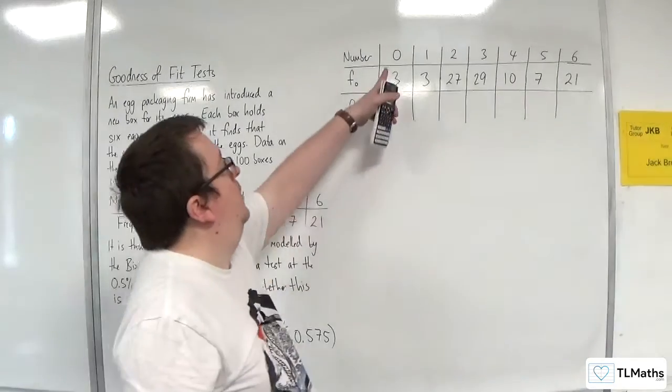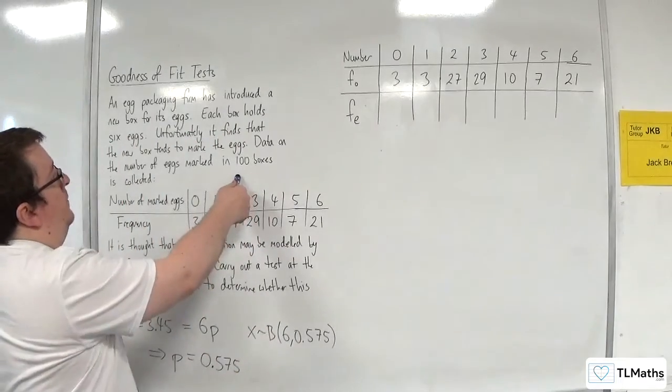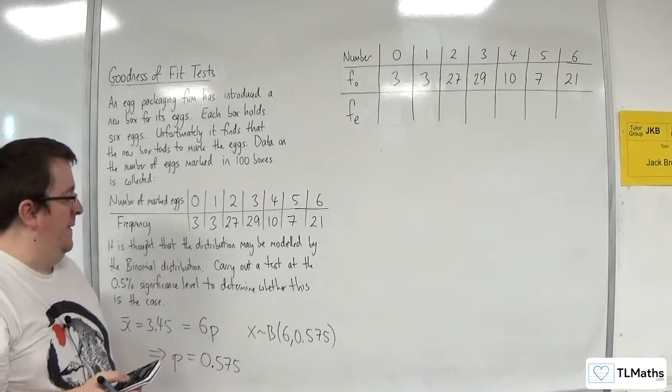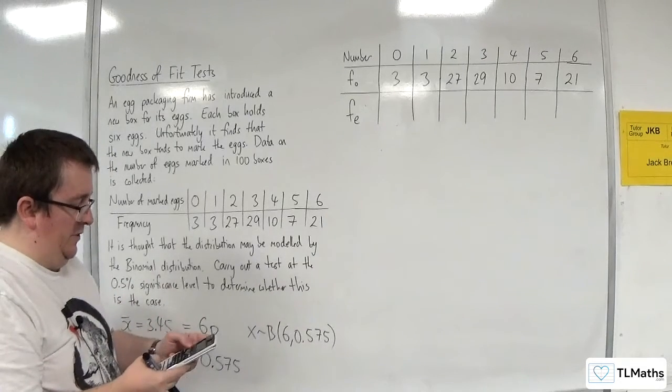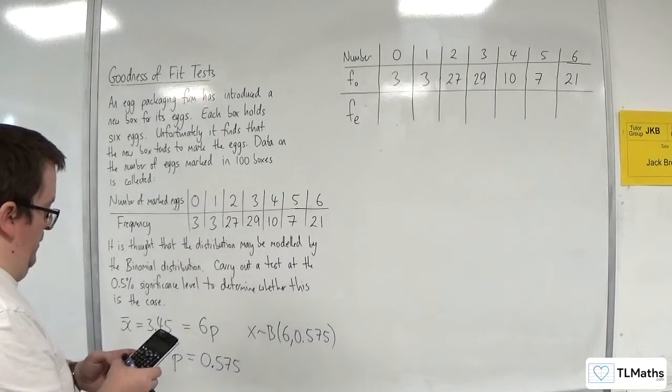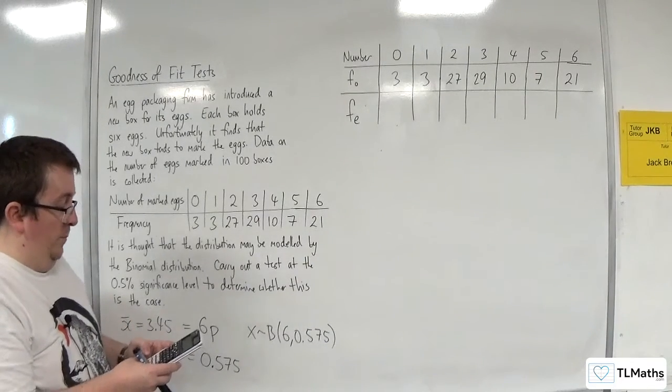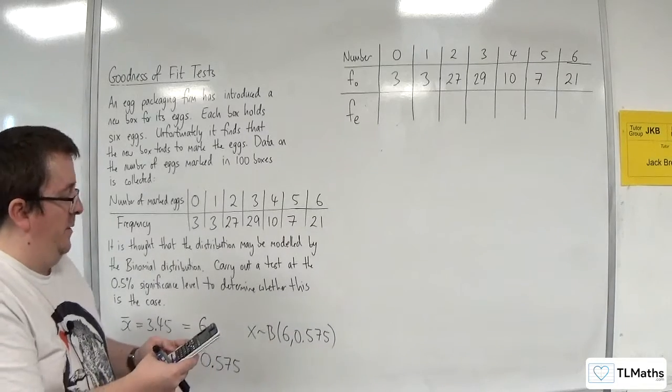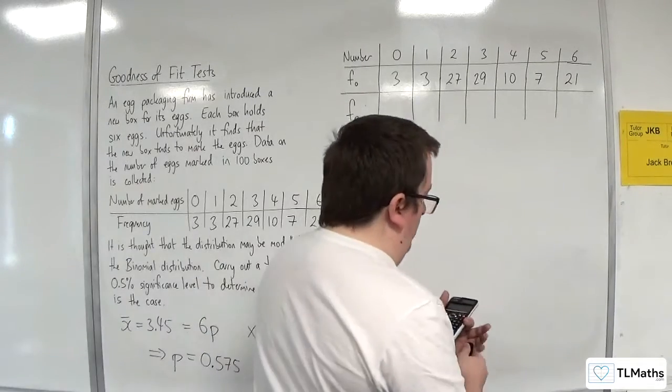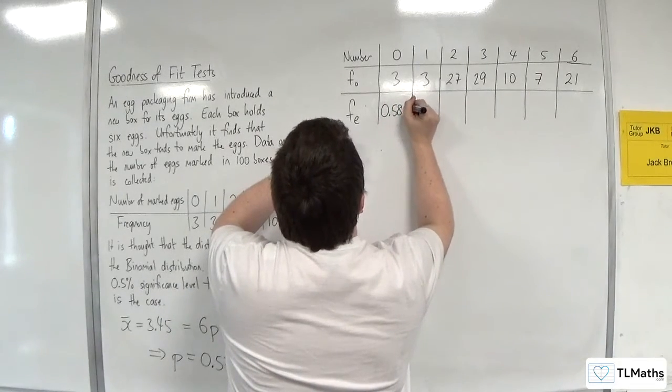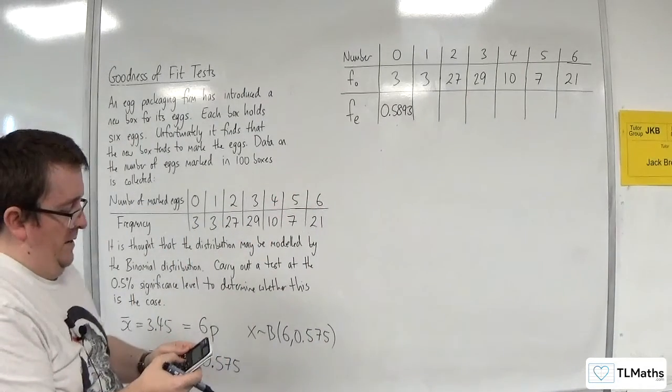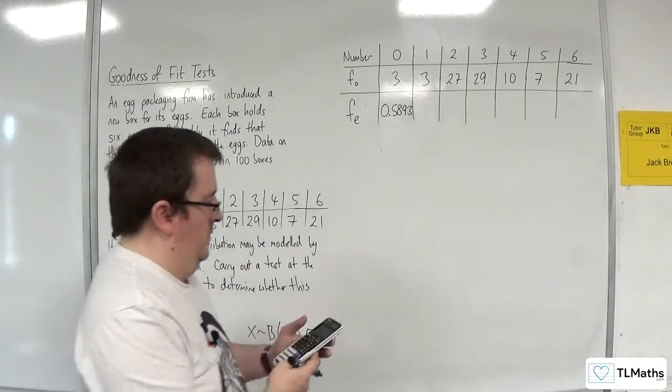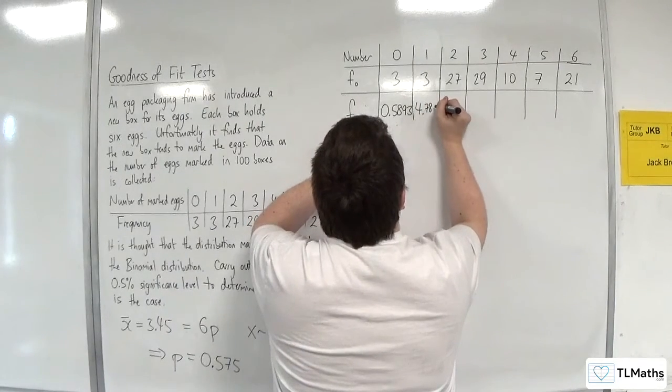So the expected frequency. I'm going to need to find the probability of x being equal to 0, and then times that by 100, and that's going to get me my expected frequency. Now, probably the easiest way to do that would be to use the formula. We're going to have nCr, so 6C0, times by 0.575 to the power of 0, times by 0.425, so 1 take away p, to the power of 6. Then I need to times that by 100. We get 0.5893.